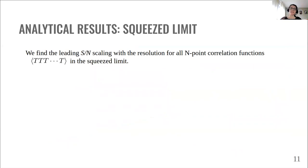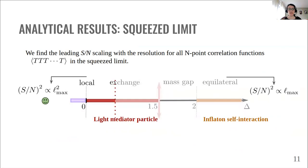So far in our estimations, we didn't consider any particular kinematical configuration. But now let's look at the squeeze limit of correlators. Here we derive analytically the leading signal to noise scaling with the resolution for all N-point correlation functions of temperature anisotropies. Here is what we find. Taking back the plot of delta, namely the plot of the mass of the mediator in relation to the scaling of the correlators. We find that the scaling converges to mode counting for values of delta related to a light mediator particle. While other interactions such as the inflaton self-interaction have a less favorable scaling with the resolution and are therefore less detectable.